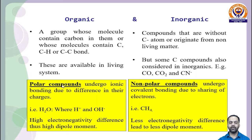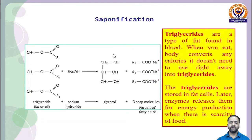Polar compounds undergo ionic bonding due to differences in charge — for example, water has H⁺ and OH⁻ molecules. Non-polar compounds undergo covalent bonding due to sharing of electrons — for example, CH₄, where four hydrogen atoms share the valence shell of carbon. Less electronegativity difference leads to less dipole moment among non-polar molecules.